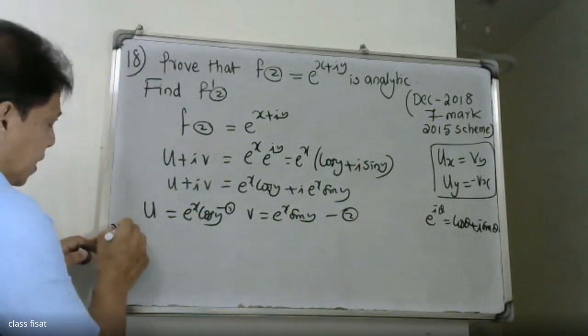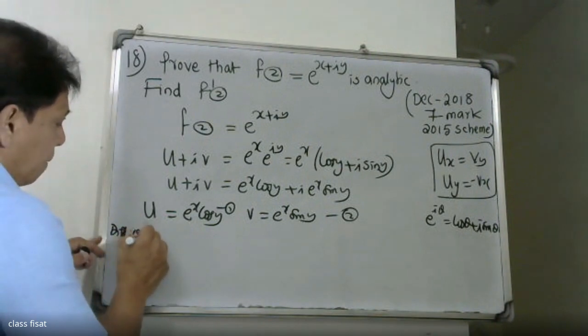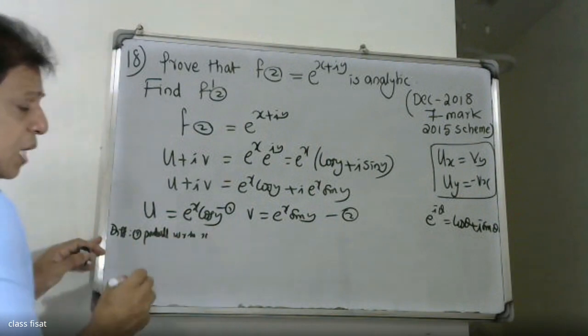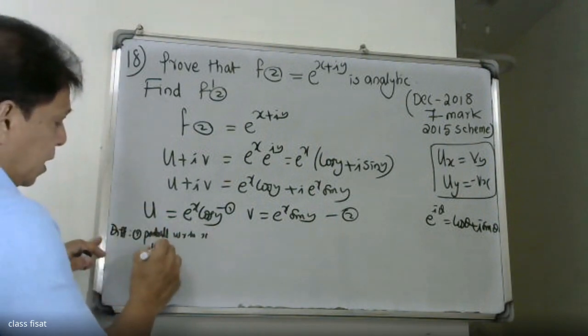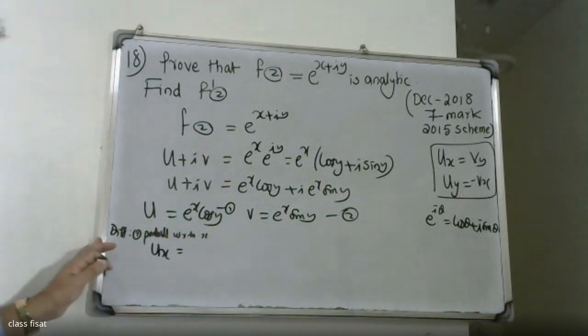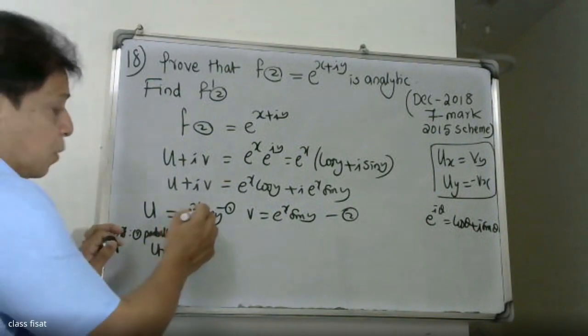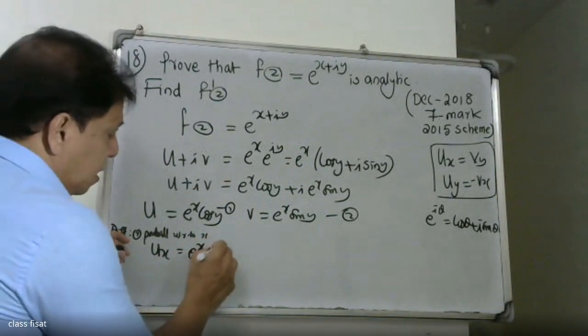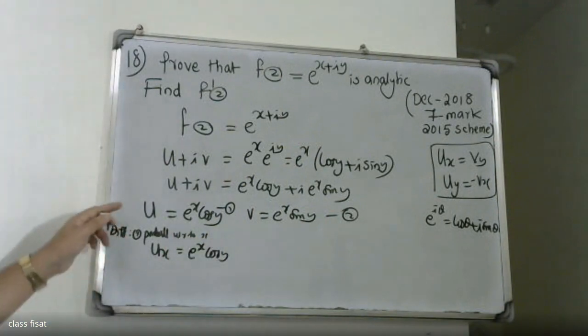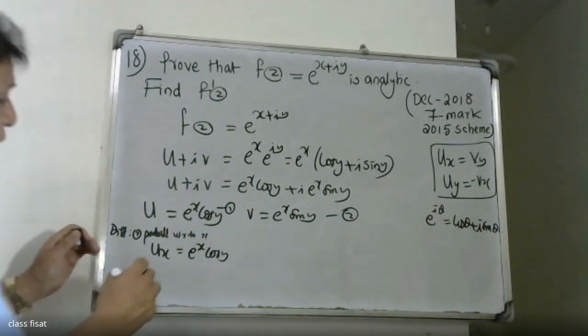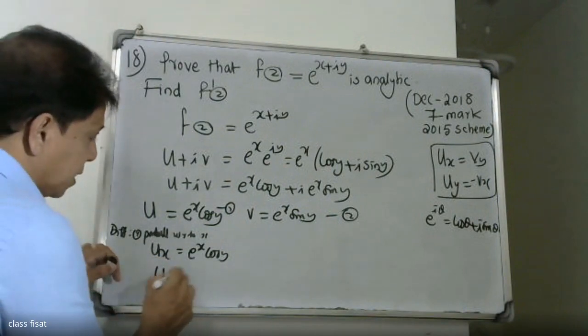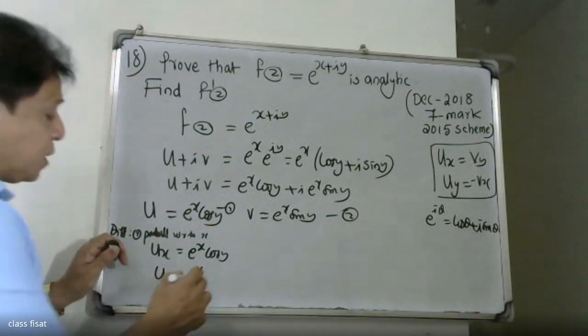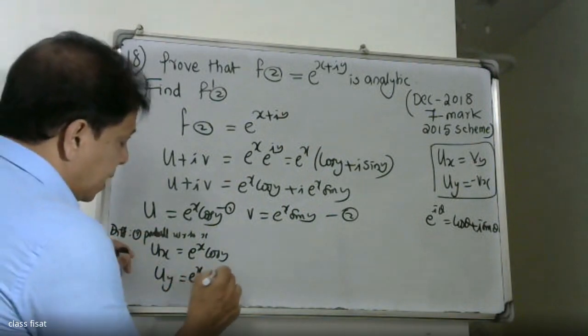Now we differentiate. Differentiating equation 1 partially with respect to x: ∂U/∂x = e^x·cos(y). Differentiating U partially with respect to y: ∂U/∂y = e^x·(-sin(y)) = -e^x·sin(y).